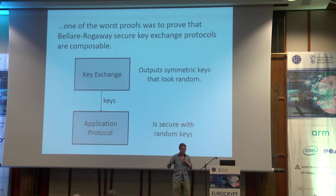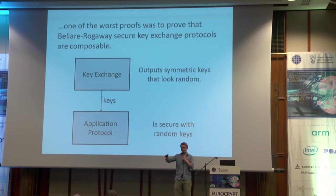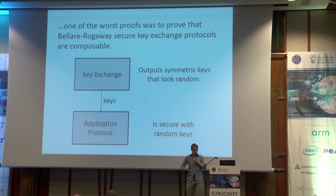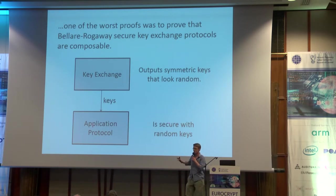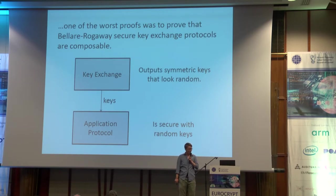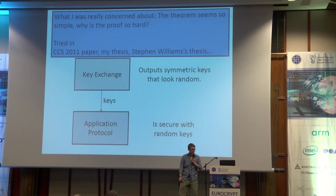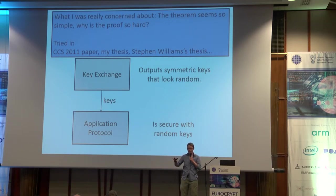One of the worst proofs I worked on was that Lennart-Rogaway key exchange protocols are composable with symmetric key protocols. This is actually very simple: you have a key exchange protocol that outputs symmetric keys that look random, and then you use them in an application protocol that is secure with random keys. So this should be straightforward, even without using universal composability. The theorem seems very simple — so why is the proof so hard?